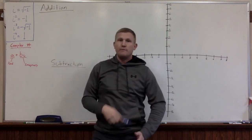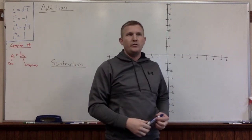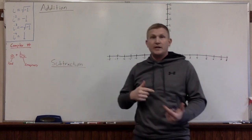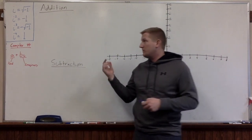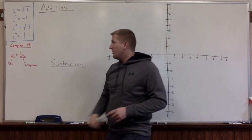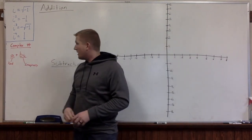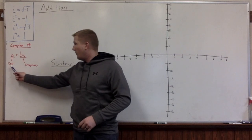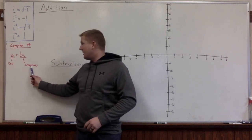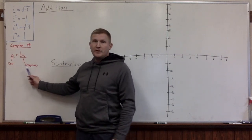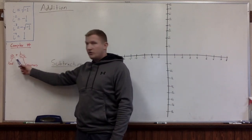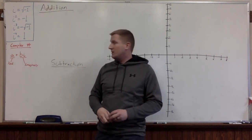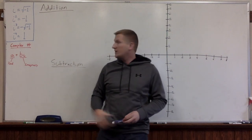And if you raise i to the fourth power, you just get positive 1 — essentially negative 1 times negative 1. And here we have a complex number; it's made up of a real component and an imaginary component. This is the universal articulation of a complex number: a plus bi.